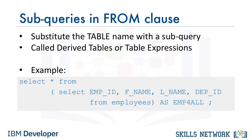This example is a trivial one, and we could just as easily have included the columns in the outer query. However, such derived tables can prove to be powerful in more complex situations, such as when working with multiple tables and doing joins.